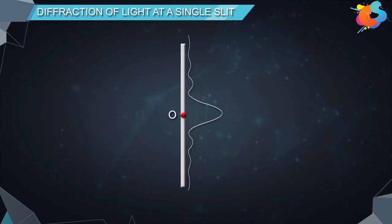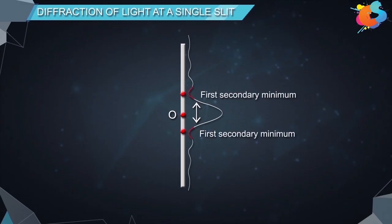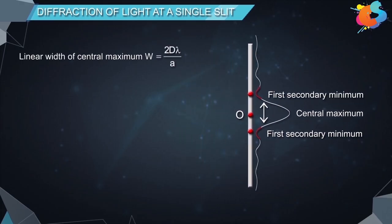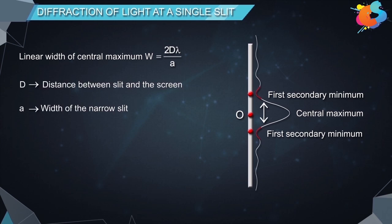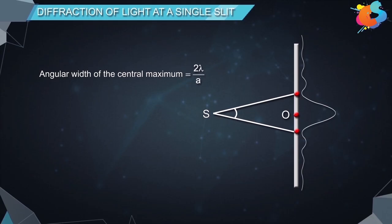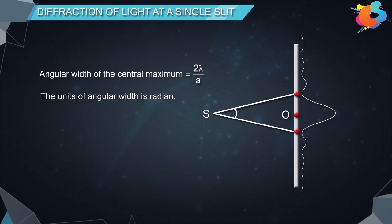The linear width of the central maximum is the distance between the first secondary minima on either side of the central maximum at O. It is given by W equals two lambda d divided by a, where d is the distance of the screen from the slit, a is the width of the narrow slit, and lambda is the wavelength of light. The angular width of the central maximum is given by omega equals two lambda divided by a, and its unit is radians.